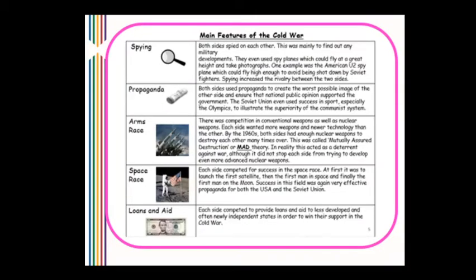There was also the space race — each side competed to launch the first satellite, then the first man in space, and finally the first man on the moon. Success in this field was very effective propaganda for both sides. Finally, there were loans and aid: each side competed to provide money or other resources to less developed and newly independent countries in order to win their support in the Cold War — basically to get more countries on their side.